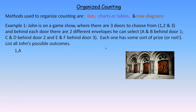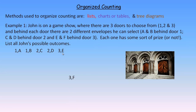We could just list them. We could list door number one — he could choose door number one and envelope A, or door number one and envelope B. Here I'm trying to make the list organized, so this covers all the possibilities where he selects door number one. Then we could go to door number two and envelope C or D — two more possibilities. Or door number three and select E, or door number three and select envelope F.